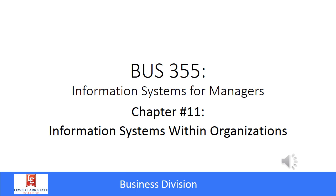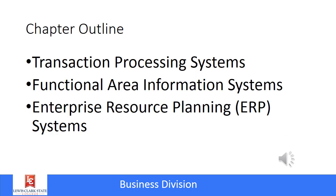The chapter in this module discusses how information systems are used within organizations. The focus is primarily larger organizations, but some of what the chapter discusses will apply to small businesses as well. This chapter covers three main ideas: transaction processing systems, functional area information systems, and enterprise resource planning systems. We'll discuss all three of these as we continue.